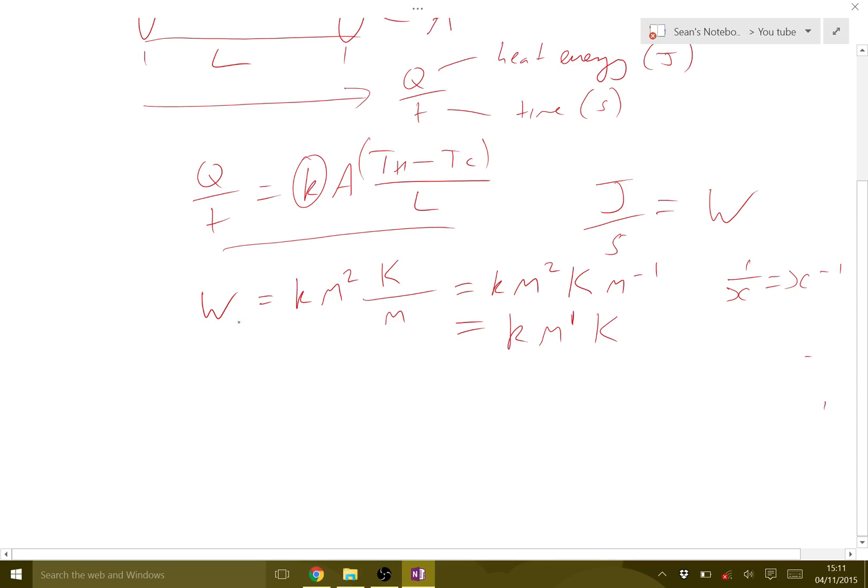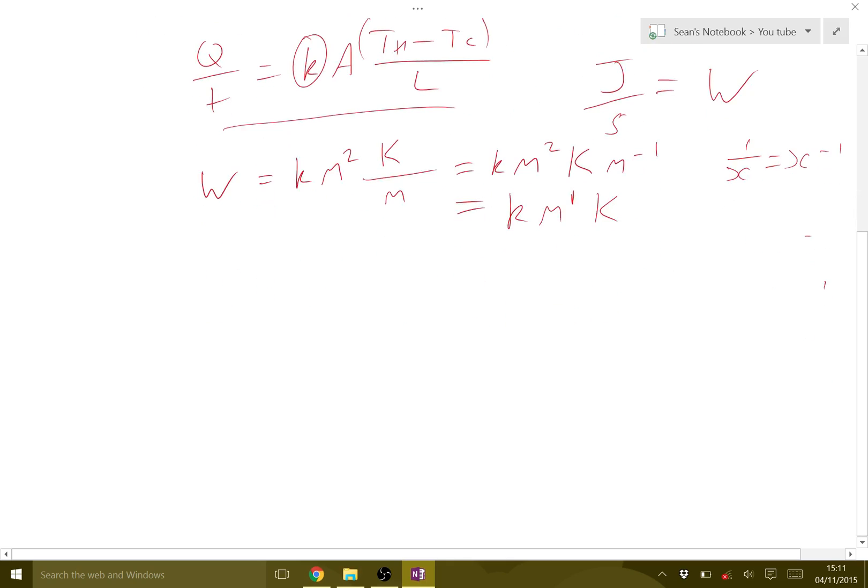And that's all equal to W here. So I'll rewrite this because it's a bit clearer. So I've got W equals K M K. Now I'm interested in the little k, the thermal conductivity, so I need to move my M and K, big K over. So I end up with K equals W over, I'm just dividing M, K. And I'm going to do something similar to use this again and say it's W M minus 1, K minus 1.